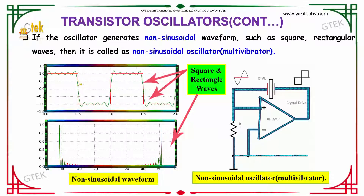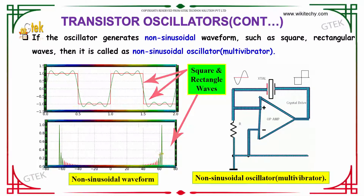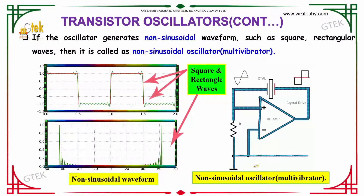If the oscillator generates a non-sinusoidal waveform, such as square or rectangular waves, it is called a non-sinusoidal oscillator, referred to as a multivibrator. You can see the square and rectangular waves — that is a non-sinusoidal waveform produced by non-sinusoidal oscillators.